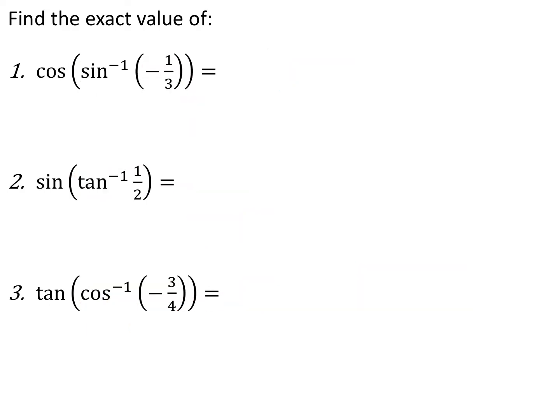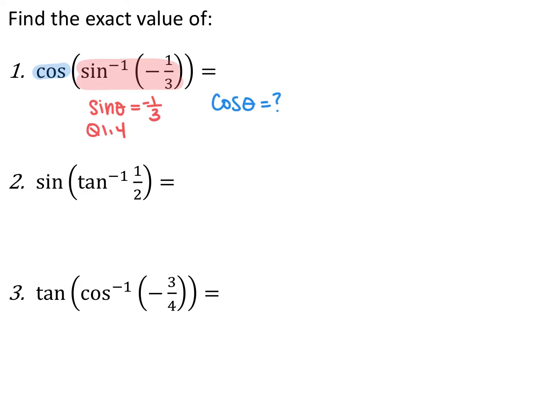Here we have more composites where regular trig is on the outside, so my final answer is a ratio. These aren't on the unit circle, so we do it differently. Because they're different trig functions, they won't cancel. For the first one, cosine of the sine inverse of negative one-third: the inside means the sine of some angle theta equals negative one-third in quadrants one or four. Since this is not on the unit circle I don't know the angle, but I need cosine of that angle. I draw a triangle in the fourth quadrant because the value is negative, with y over r equal to negative one-third.